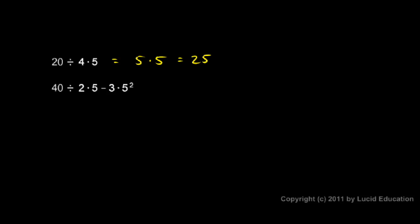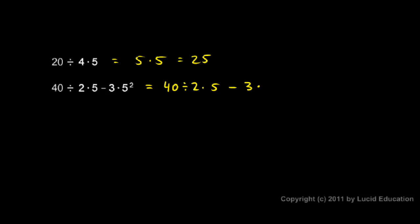The same thing happens in this next expression with division and multiplication, but I'm not ready to do that yet because I see an exponent here. I know I need to do the exponent first, then multiplication and division, then subtraction. So let's rewrite: 40 divided by 2 times 5 minus 3 times 5 squared. That 5 squared is 5 times 5, which is 25. Now the exponents are done.